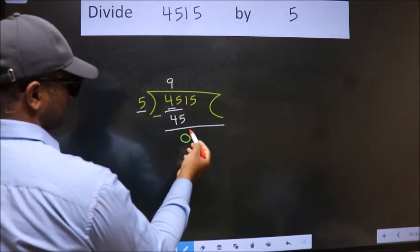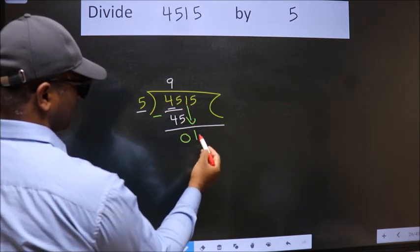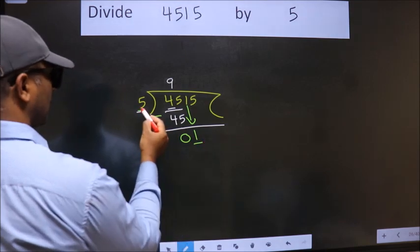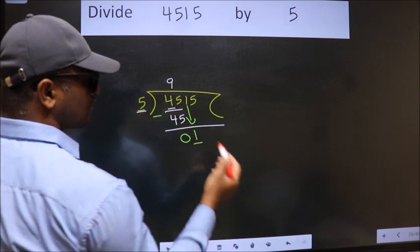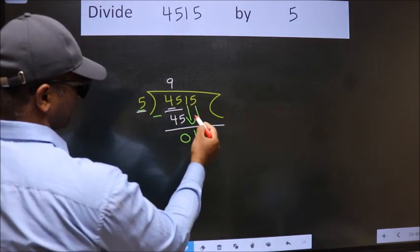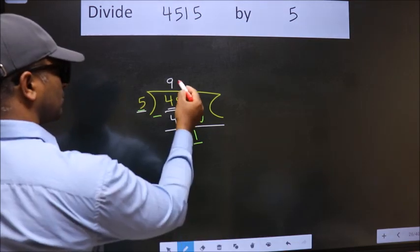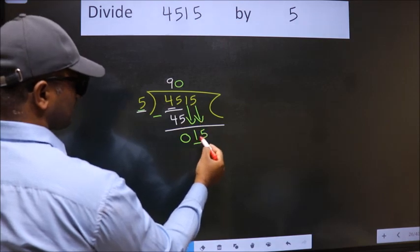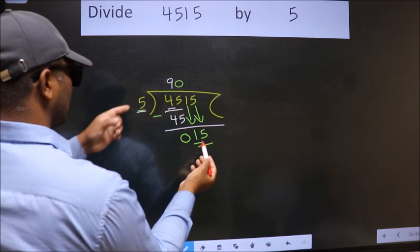After this, bring down the next number, so 1 comes down. Now we have 1 here and 5 as the divisor. Since 1 is smaller than 5, we should bring down the second number. The rule to bring down the second number is: put 0 in the quotient here, then only we can bring down this number. So we get 15.